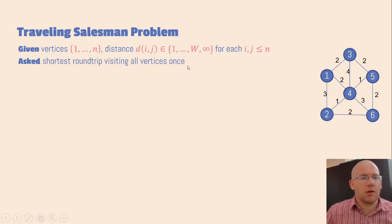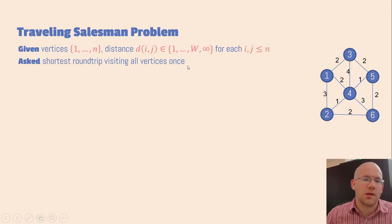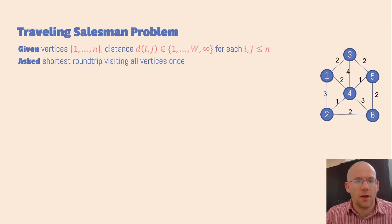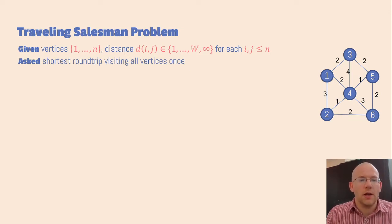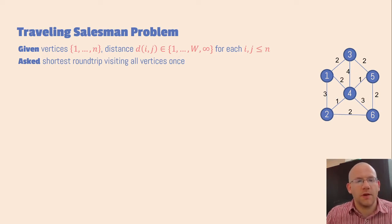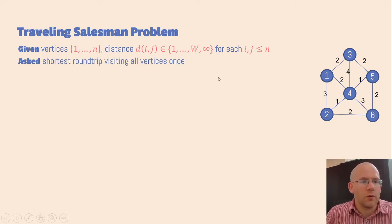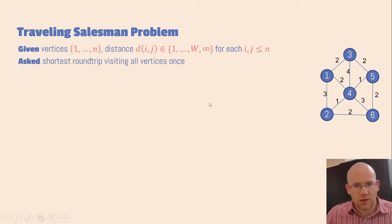In the traveling salesman problem we are given n vertices and between each pair of vertices we are given a distance. In this talk this distance will be an integer between 1 and capital W, or infinity. The goal is to find the shortest roundtrip that visits all the vertices once.